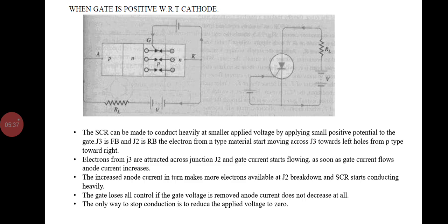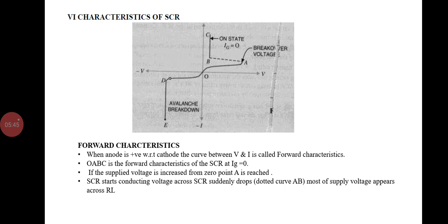The only way to stop conduction is to reduce the applied voltage to zero. The VA characteristics show: under forward bias condition when the anode is positive with respect to cathode, the curve O-A-B-E-C represents the forward characteristics of the SCR at IG equal to zero. The SCR starts conducting and the voltage across it suddenly drops. Under reverse bias condition when the anode is negative with respect to the cathode, reverse current flows. As reverse voltage increases, avalanche breakdown occurs and it starts conducting heavily — this is called the reverse breakdown voltage.